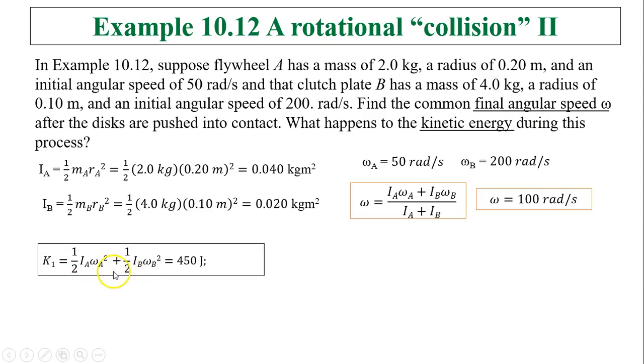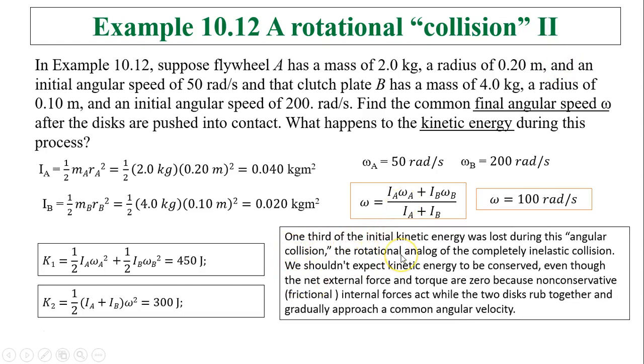Now let's check out the kinetic energy. This is kinetic energy before, for omega A and omega B. Flywheel A and clutch plate B. After, you add the two together with a common angular speed, so you'll have 300 joules. So in this case, energy is lost. Where did it go? So about a third of initial kinetic energy was lost during this angular collision. Lost really means not lost. It's transformed into heat in this case. So the rotational analog of a completely inelastic collision. We shouldn't expect kinetic energy to be conserved, even though the net external force and the torque are zero, because non-conservative friction forces, the internal forces act when the two disks rub together, and it gradually approaches a common angular velocity because that frictional force produces heat, internal energy. That's what became of the initial kinetic energy, it became internal energy.